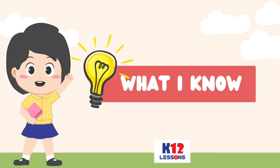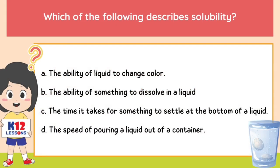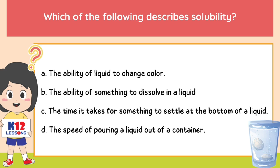What I Know. Which of the following describes solubility? A. The ability of liquid to change color. B. The ability of something to dissolve in a liquid. C. The time it takes for something to settle at the bottom of a liquid. D. The speed of pouring a liquid out of a container.